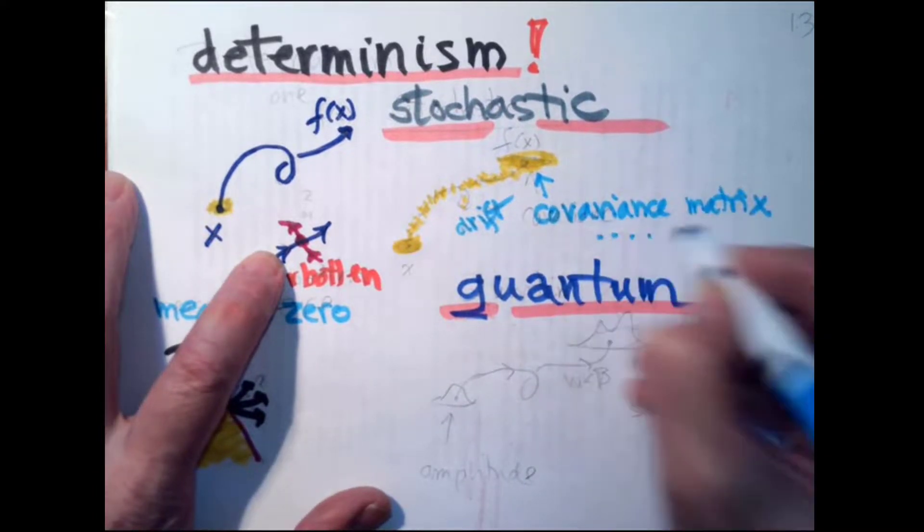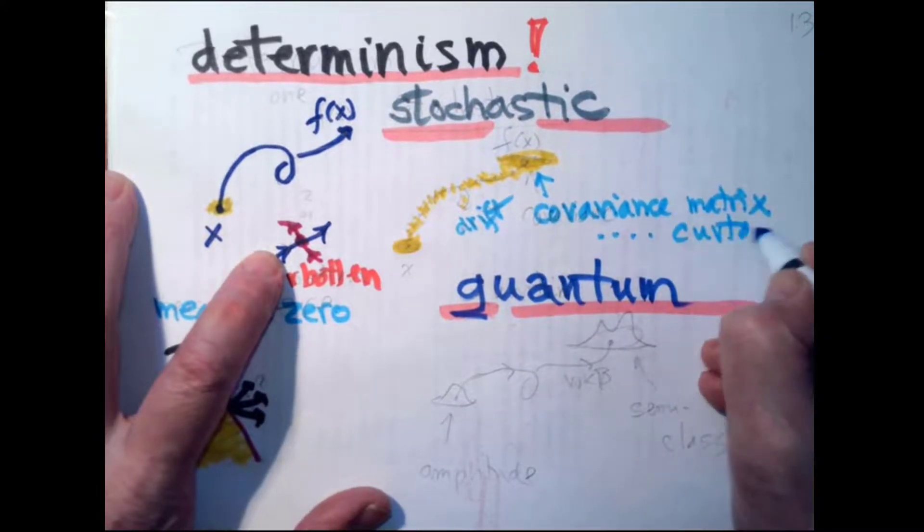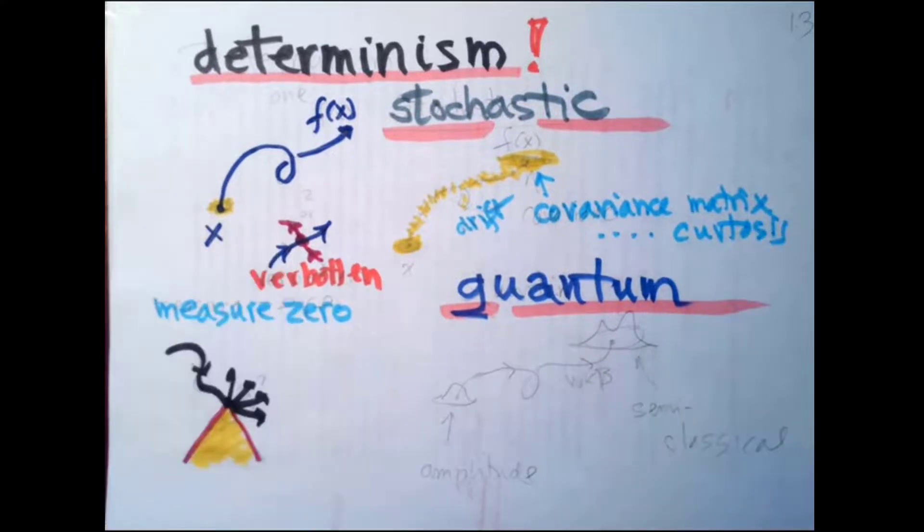And in the leading order, that's called a covariance matrix. And then there are all kinds of things called kurtosis and God knows what, all kinds of things. And now how does this connect to the course that we are teaching here?